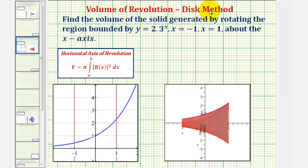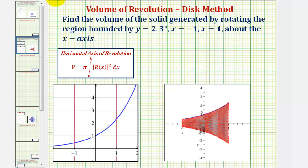We want to use the disk method to find the volume of the solid generated by rotating the region bounded by y equals 2.3 raised to the power of x, x equals negative 1, x equals 1, about the x-axis.